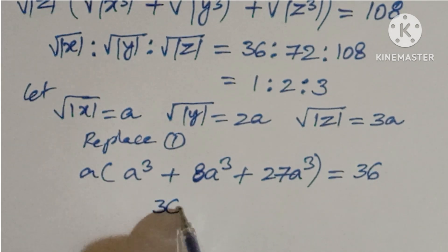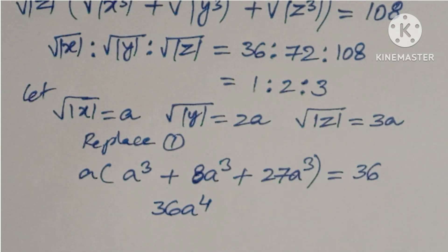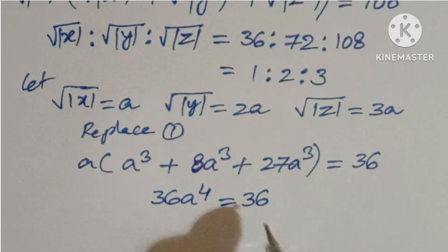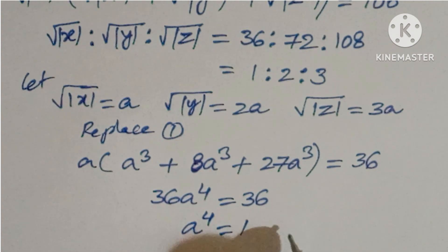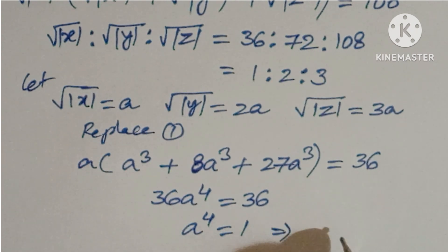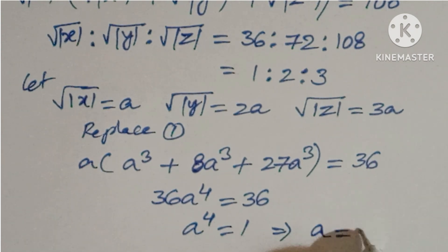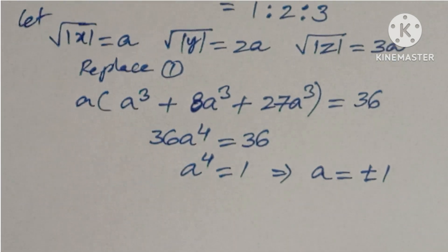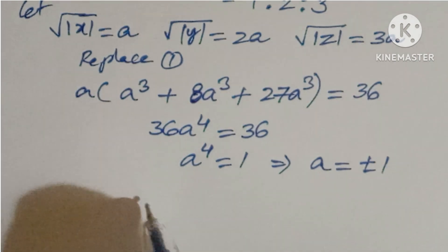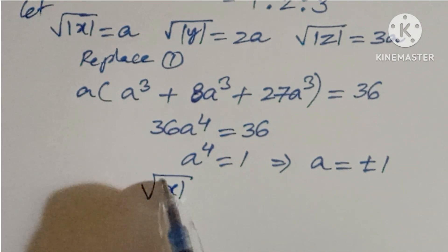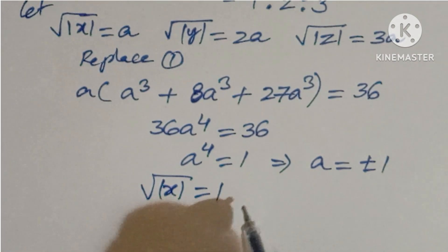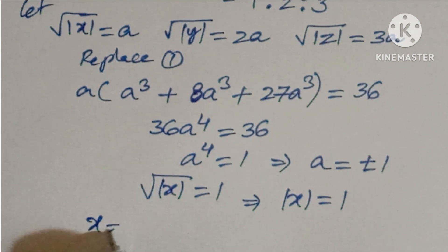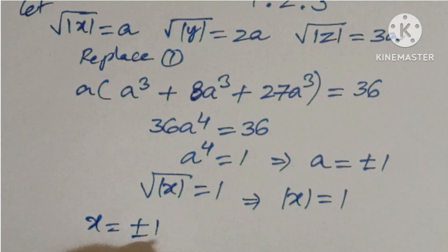This gives 36a⁴ = 36, so a⁴ = 1, which implies a = ±1. Taking only real values, √(|x|) = 1, which implies |x| = 1, so x = ±1.